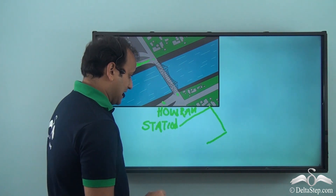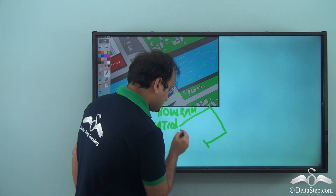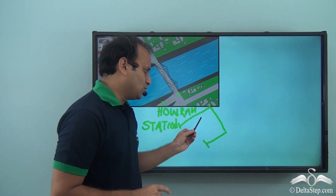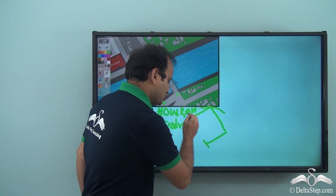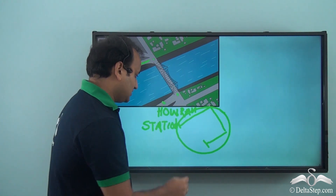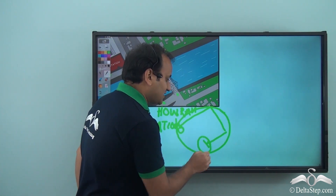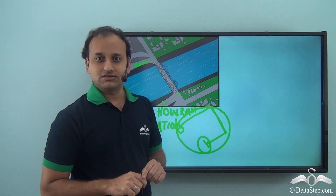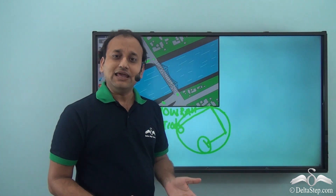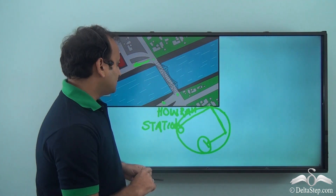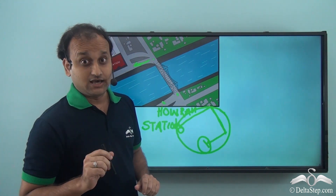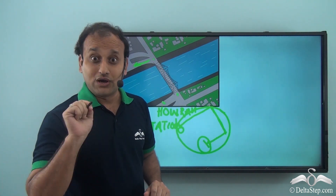While this drawing can help you get from one point to another, if somebody who doesn't know you or doesn't know what you've tried to show here looks at it, will that person be able to understand where it leads, where you started, and where you took the left and right turns? Not really. Because although this is a map, it is not a very correct or detailed map. So what would a detailed map of this area look like? Well, let's see a Google Map for this.